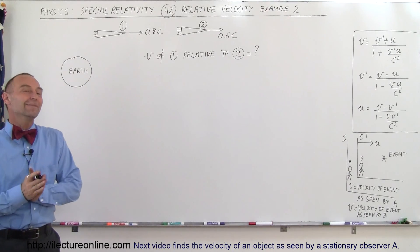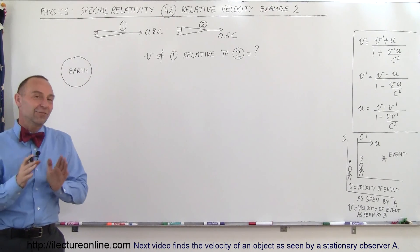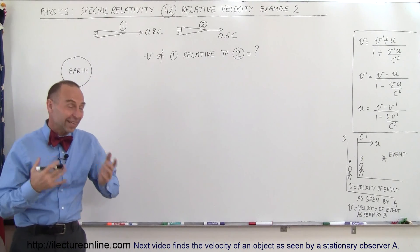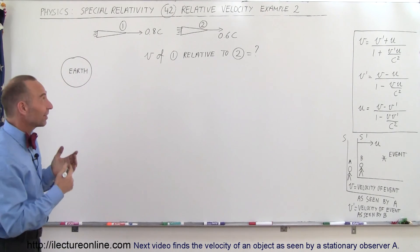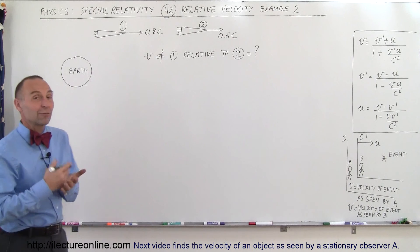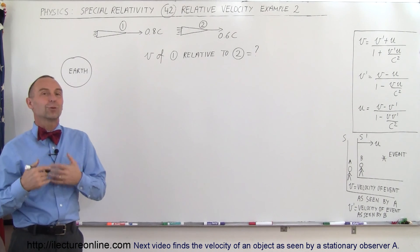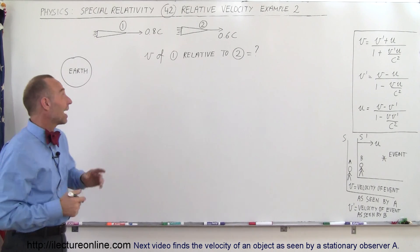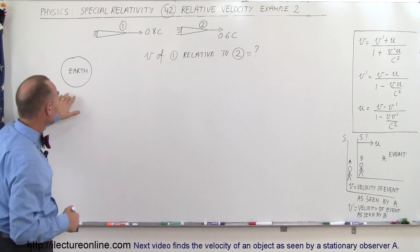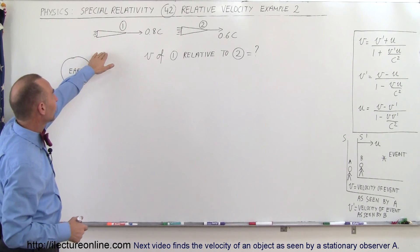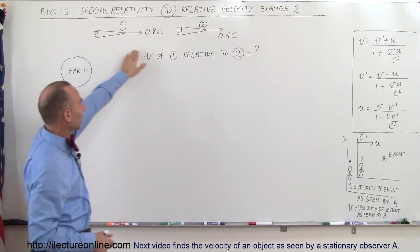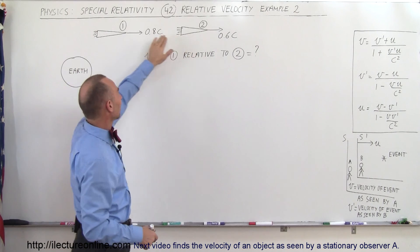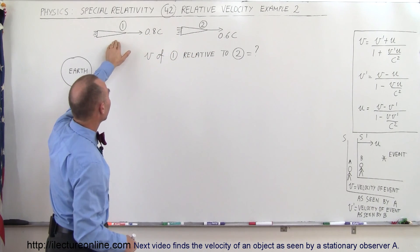Welcome to ElectronLine. In this video, we're going to do a second example of how to calculate the velocity of one item relative to another. Here we have the Earth and two spaceships — one that's trying to get away and the other one that's pursuing.